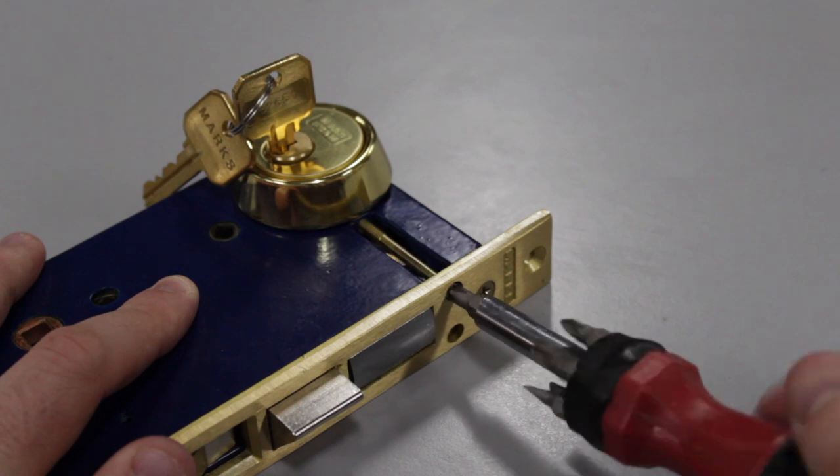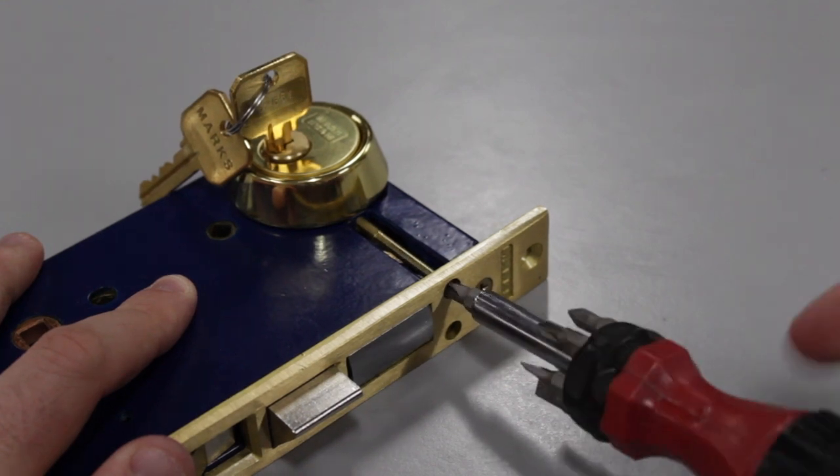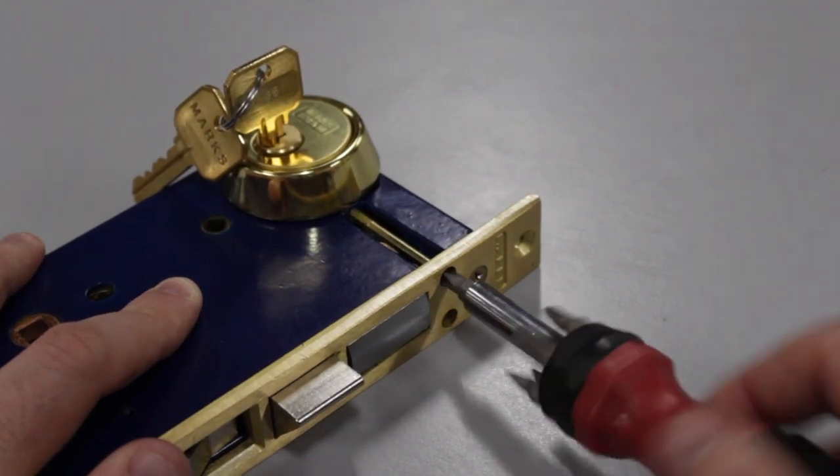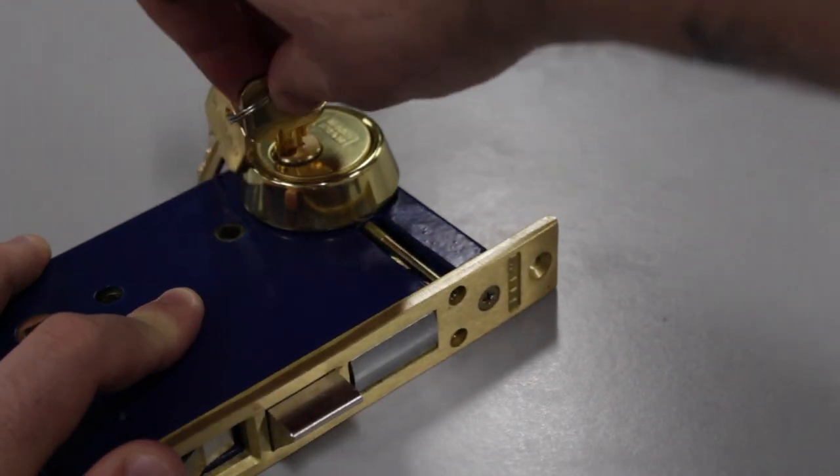Tighten the screw back into place so the pin catches the grooves in the key cylinder and you have installed your key cylinder into your Marks lock set correctly.